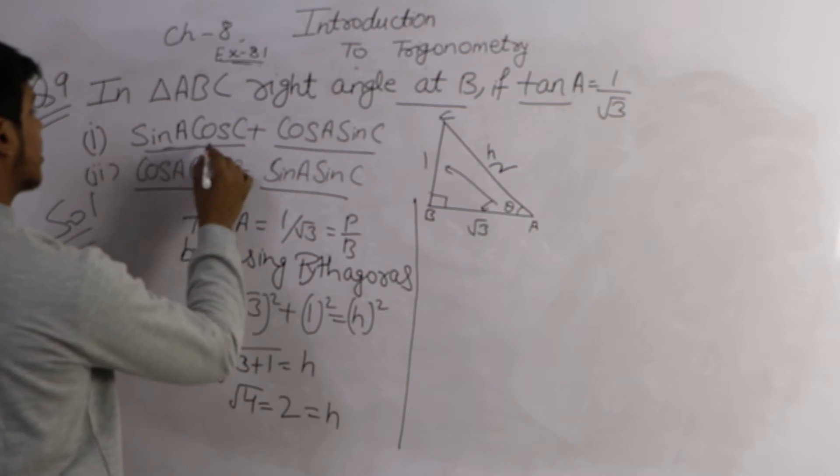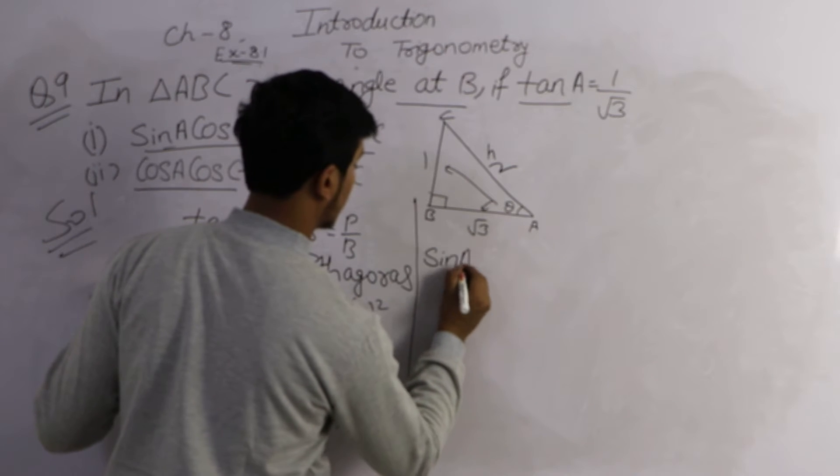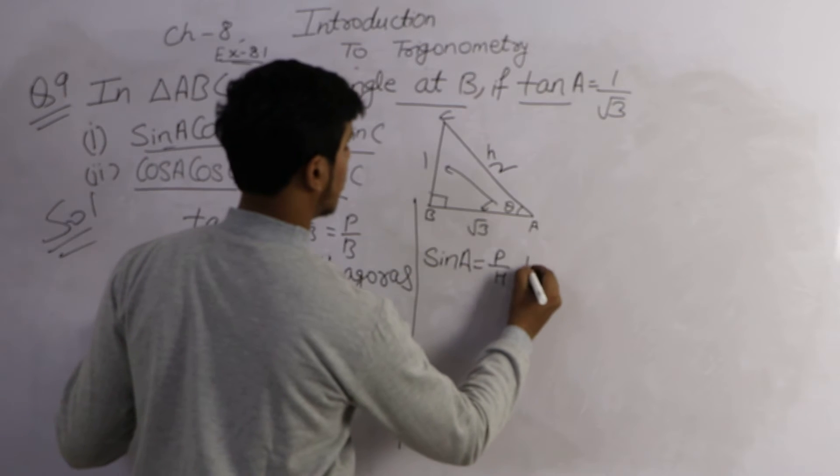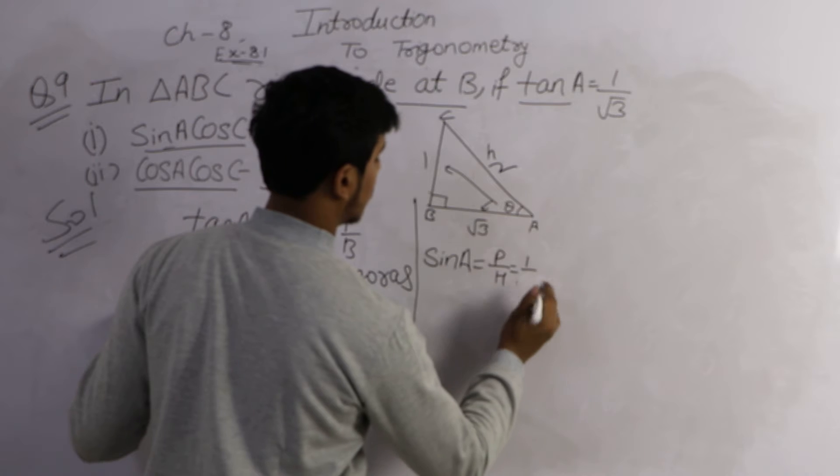We have to calculate sin A, cos A, sin C, cos C. Sin A means perpendicular upon hypotenuse. Perpendicular is 1 and hypotenuse is 2.